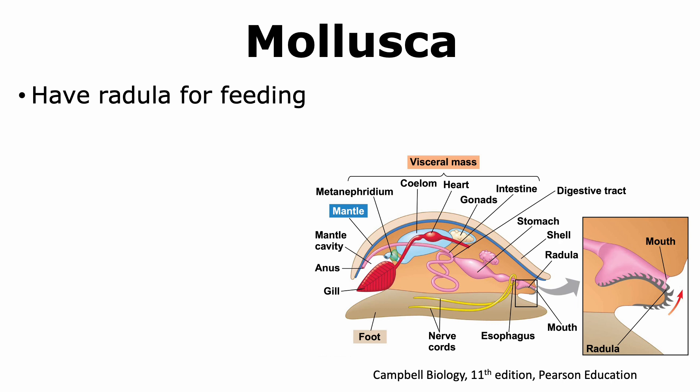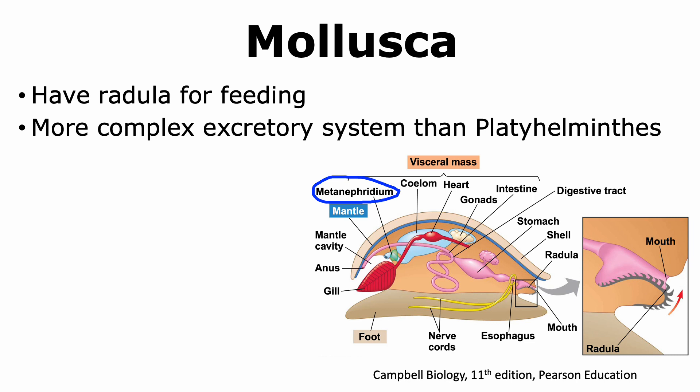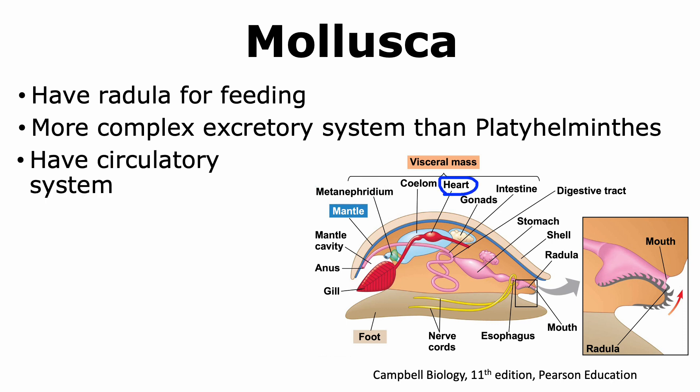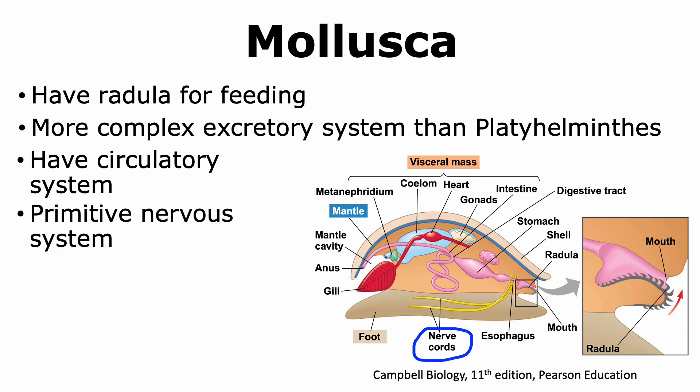Mollusks have a spiky tongue-like structure called the radula, which plays an important role in feeding. They tend to have more complex excretory systems than platyhelminthes, showing the presence of metanephridia — specialized structures that help eliminate nitrogenous waste. Mollusks have a circulatory system with a heart and a primitive nervous system. Most mollusks have nerve cords but do not have a brain unless they belong to a certain class.